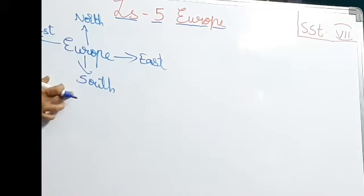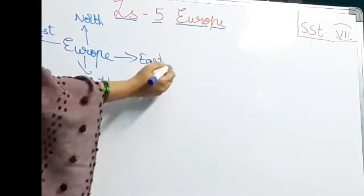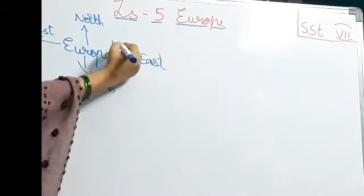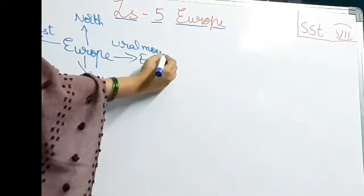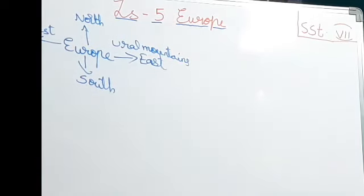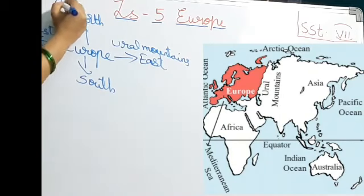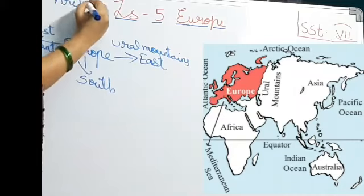Now let us see on the east which boundary is located. Here on the east we have Ural Mountains - it is like a boundary to the east side. And to the west we have the Atlantic Ocean. You can observe even the map - on the west it is the Atlantic Ocean. And on the north what we have? The Arctic Ocean. Very good students.